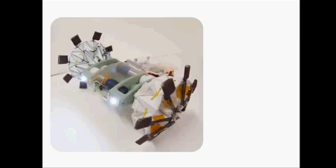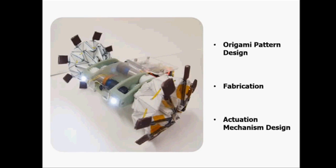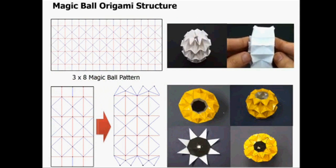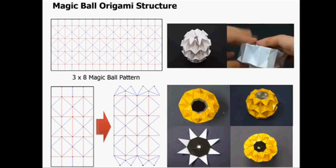To build an origami wheel robot, we needed to solve three issues. First is wheel pattern design, second is fabrication, and third is actuation. The origami pattern for the wheel was made by using one of the most famous origami patterns, the magic ball pattern. To make a wheel with this pattern, additional spoke design was used.